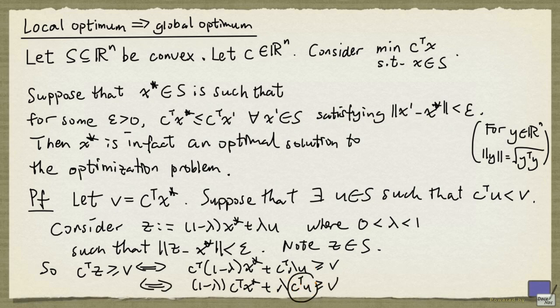However, we know that c transpose u is less than v and c transpose x star is exactly v. So 1 minus lambda v plus lambda times something strictly less than v is strictly less than v here. But this is equal to v, and so we have v greater than v which is impossible. So what this is saying is that there is no such u, and so x star is an optimal solution to the optimization problem.